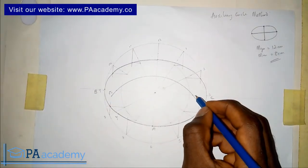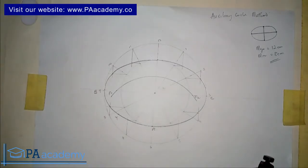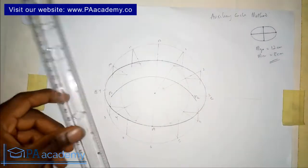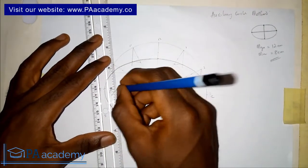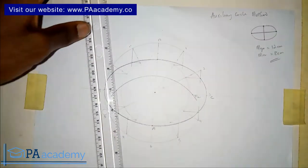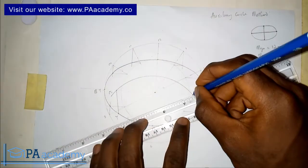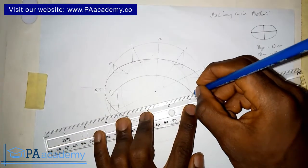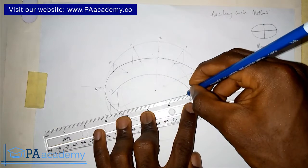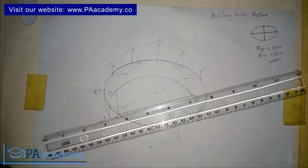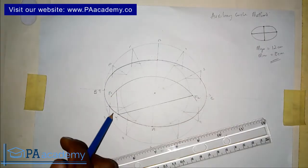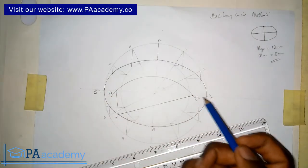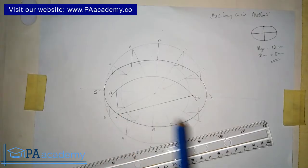The next thing we are going to do is draw a line from F1 to Y — remember, point Y is where we are asked to draw the tangent to the ellipse. Then we also join F2 to point Y. I'll join F1 to Y and then from point Y to point F2. This gives us an angle at point Y.